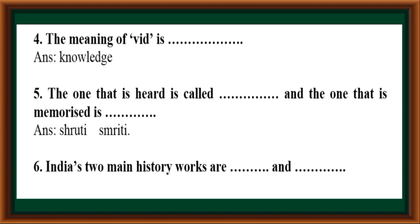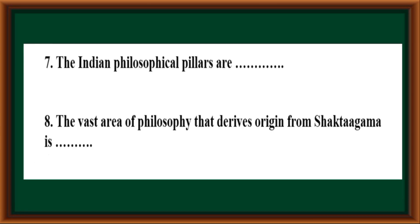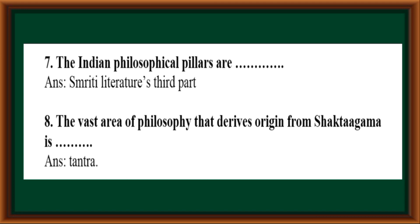India's two main history works are Ramayana and Mahabharata. The Indian philosophical pillars are Smriti literature's third part. The vast area of philosophy that derives its origin from Shaktagama is Tantra.